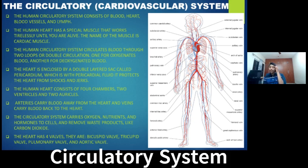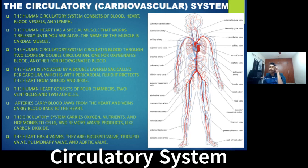Arteries carry blood away from the heart, and veins carry blood back to the heart. The oxygenated blood is carried by arteries to all parts of the body, and veins bring the deoxygenated blood from all parts of the body back to the heart. Veins have less pressure than arteries, because ventricles pump the blood, creating a lot of pressure. So arteries do not need valves.